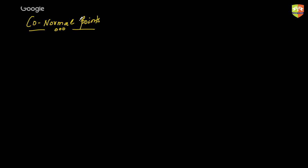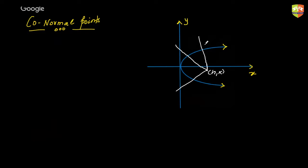Today's lecture, I'll be starting with co-normal points. What is a co-normal point? Let me define this for you. Let's say we have a point and from this point I draw normals to the parabola. All these lines are normal to the parabola, meeting the parabola. My question is: how many normals can I draw from an external point onto the parabola?